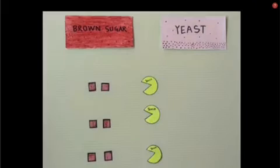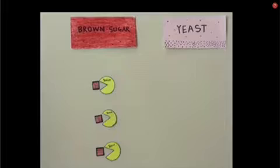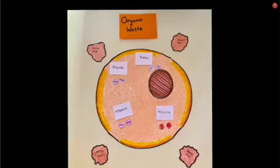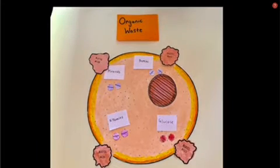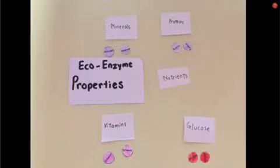The yeast consumes brown sugar for fermentation where it produces acetic acid which disrupts the cell membrane of the cells of the organic waste, releasing nutrients that form the properties of the eco-enzymes.